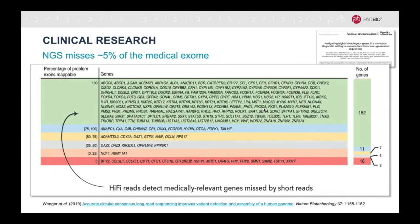Overall, it has been shown that next-generation sequencing short reads miss 5% of the medical exome. This might not sound like a big number, but it affects 193 medically relevant genes. With higher precision and recall, HiFi reads are able to resolve most of these regions.